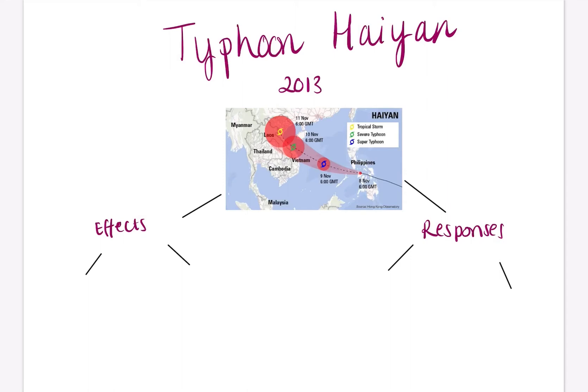Hello, this video is going to talk you through Typhoon Haiyan. This is an example that we use as part of the Natural Hazards Unit, in particular we use it in the Weather Hazards section. So AQA say you have to be able to know this is a named example of a tropical storm and you have to be able to talk about its effects and responses. So that's exactly what we're going to do in this video.